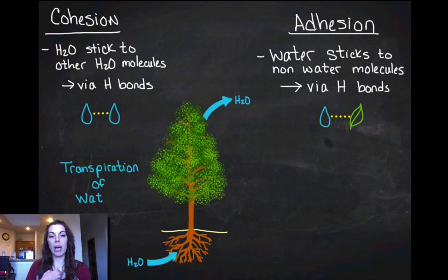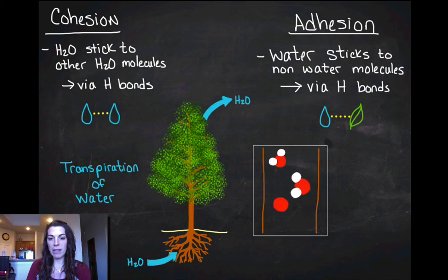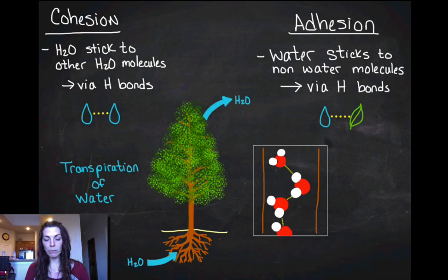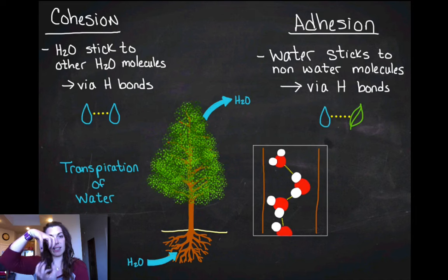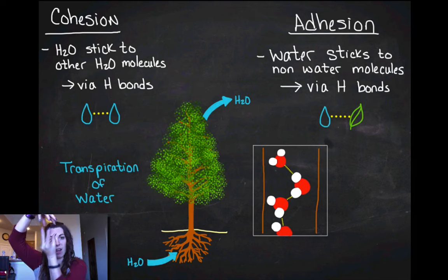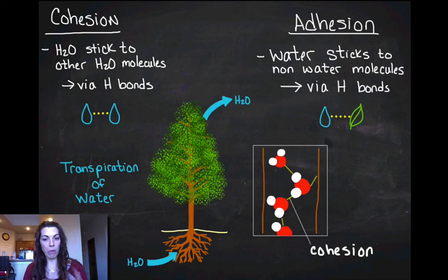Looking at a zoomed-in view of transpiration in the xylem: the water molecules are cohesively bound to one another, so as one water molecule moves, the next gets pulled up. The water moves as a column. Additionally, the water adheres to the sides of the xylem through hydrogen bonding — sticking to the actual plant vascular tissue. That's adhesion.